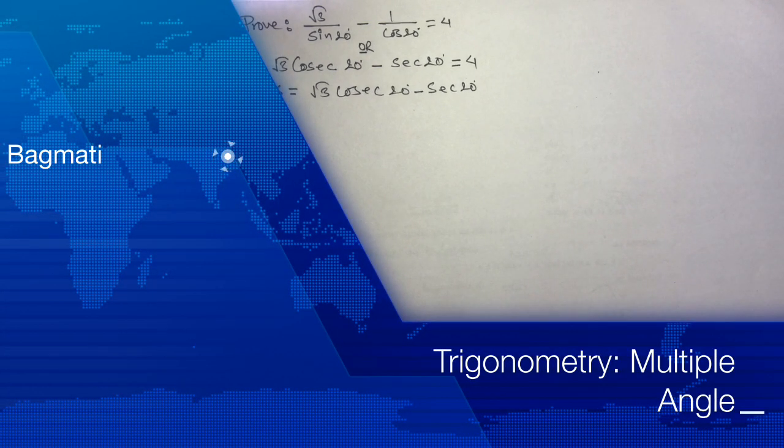Hello namaskar, welcome to our new video. Today we are here with our new trigonometric problem. The problem is to prove that root 3 by sine 20 minus 1 by cos 20 is equals to 4.